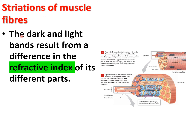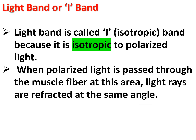The dark and light bands result from differences in the refractive index of different parts of the muscle fiber. The light band is also known as the I band or isotropic band, because it is isotropic to polarized light — when polarized light passes through at this area, the light rays are reflected at the same angle.